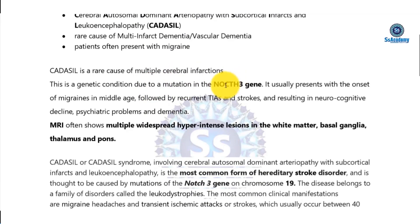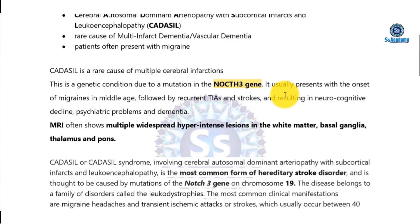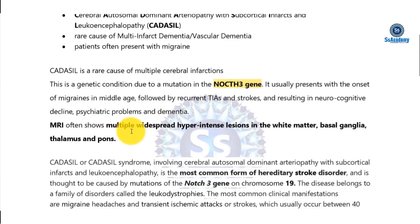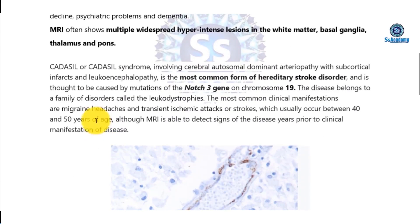CADASIL is a genetic condition due to mutation of the NOTCH3 gene. It usually presents with onset of migraine in middle age, followed by recurrent TIAs and strokes, resulting in neurocognitive decline, psychiatric problems, and dementia. MRI shows multiple widespread hyperintense lesions in the white matter, basal ganglia, thalamus, and pons.